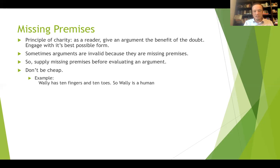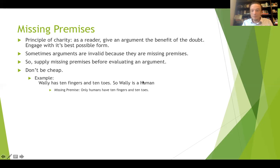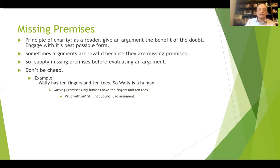For instance: Wally has 10 fingers and 10 toes, so Wally is a human. How can we make it better? There's a missing premise: only humans have 10 fingers and 10 toes. If you add that premise — which the author is assuming we know — then you've got yourself a valid argument. But it's not sound, because it's just not true that only humans have 10 fingers and 10 toes. So you give them the missing premise, engage with that version of the argument, and then it still turns out to be a flawed argument.